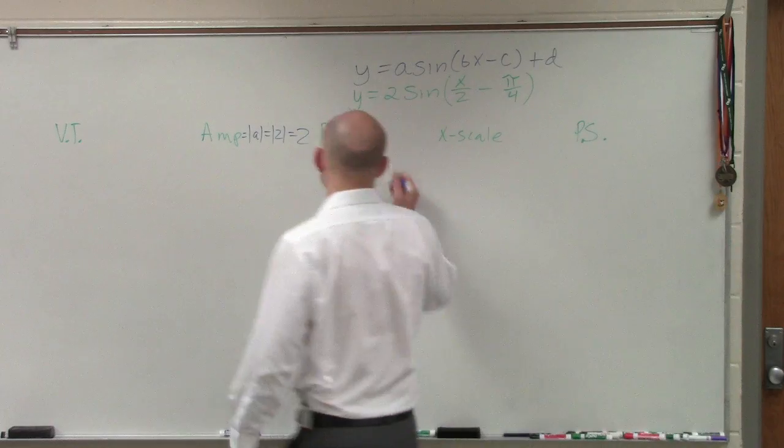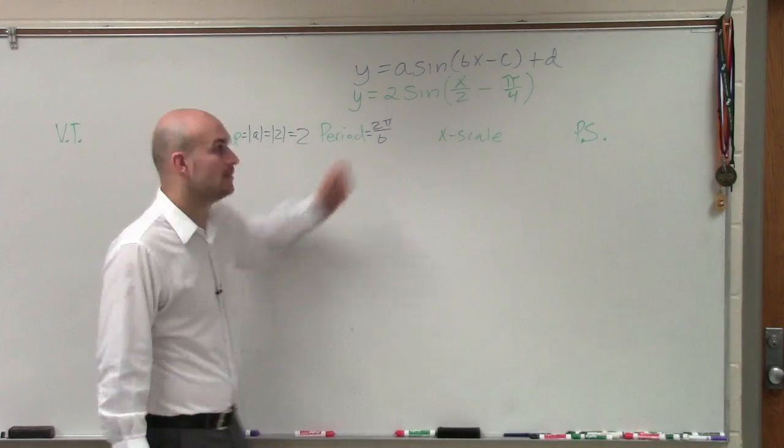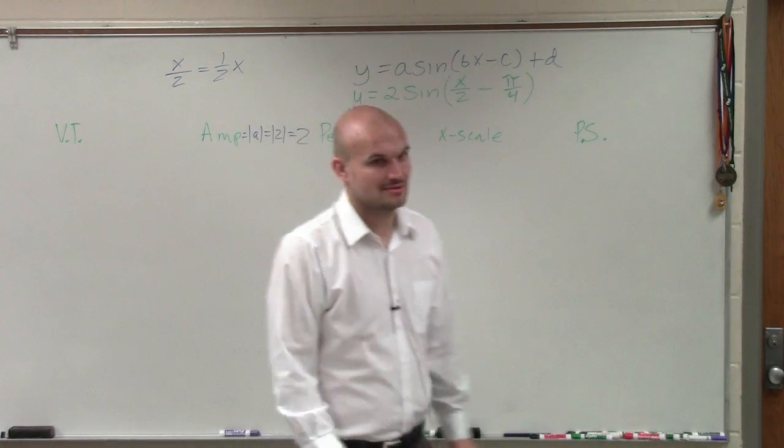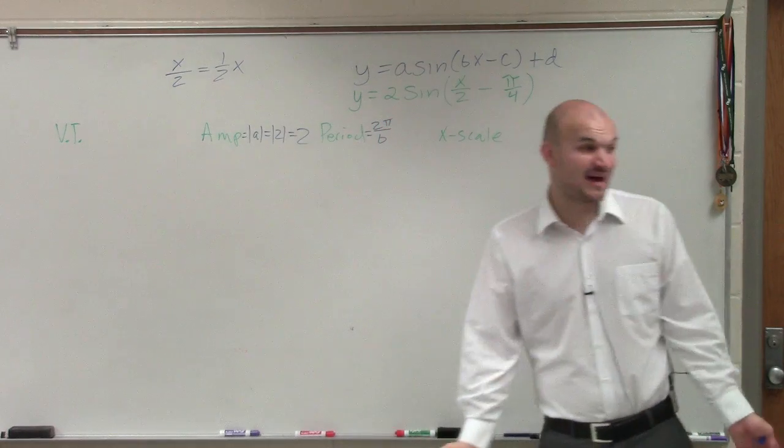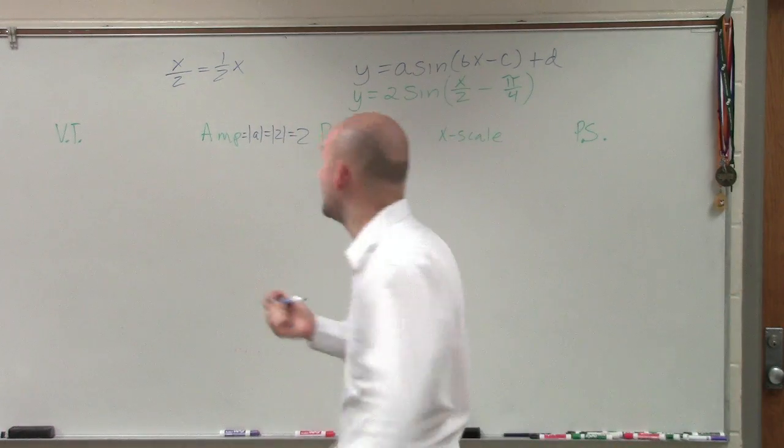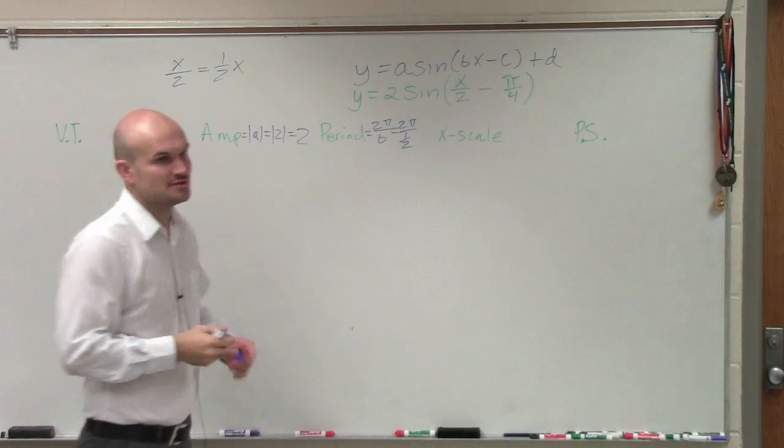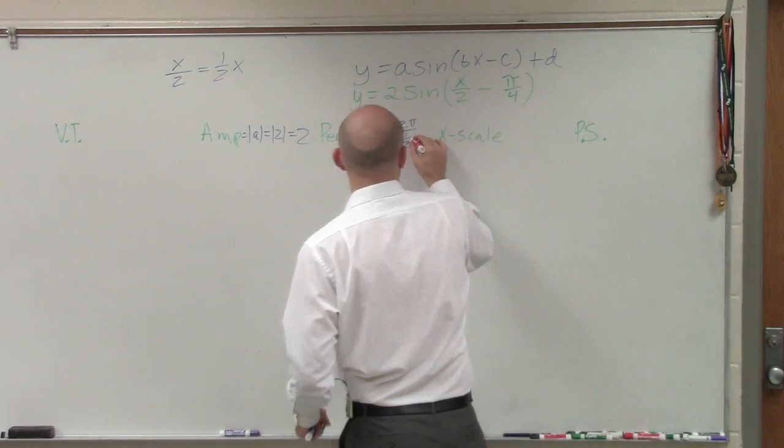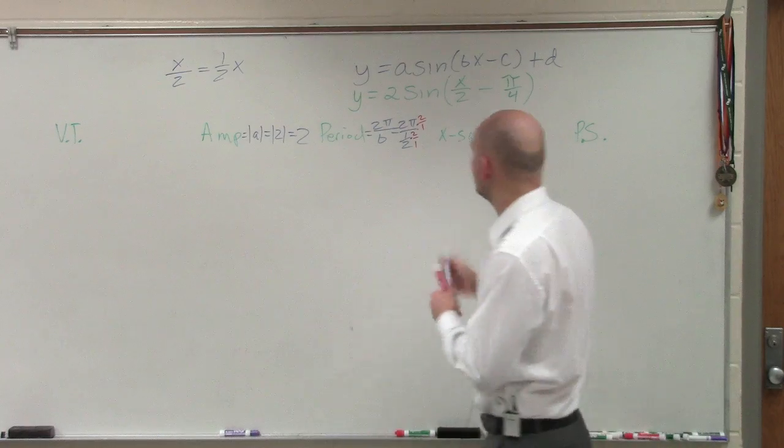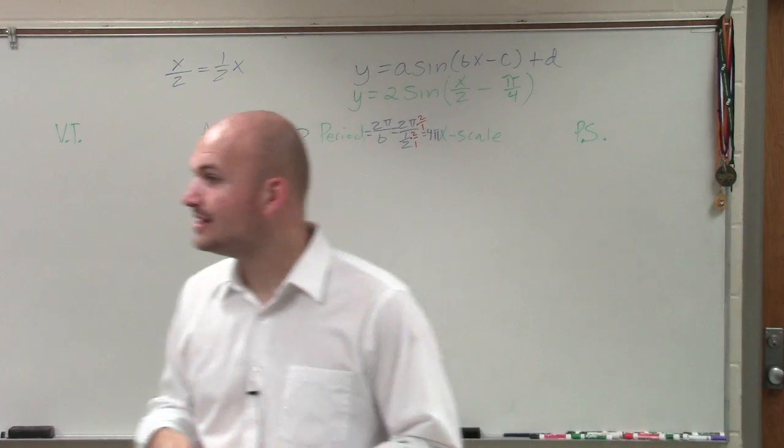We got our amplitude. That's going to be the half distance of the highest point and the lowest point of our graph. Then we go to period. Period is 2π divided by b. So we need to say, what is our b? Now, be careful. x over 2, is that the same thing as 1 half times x? So our period is not 2π, it's 4π.